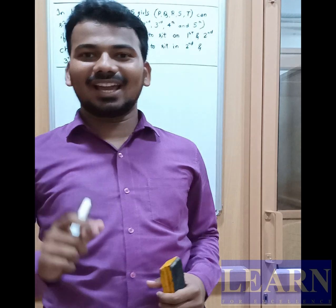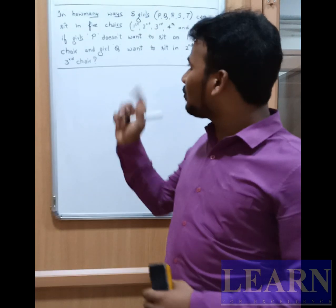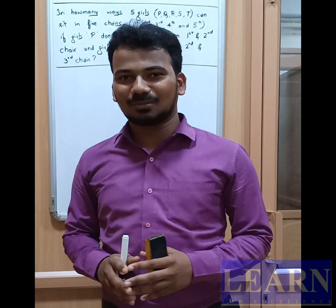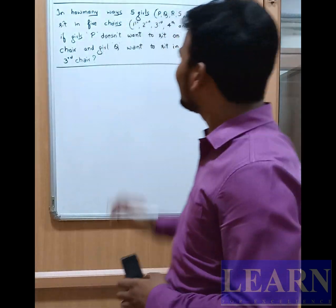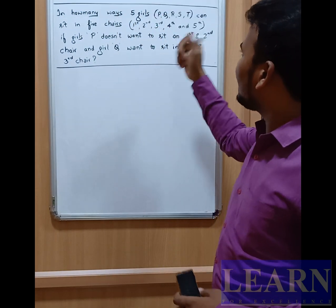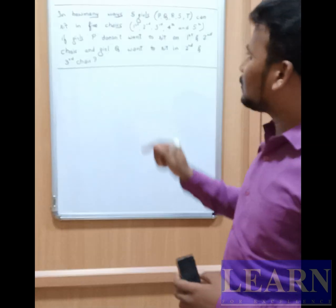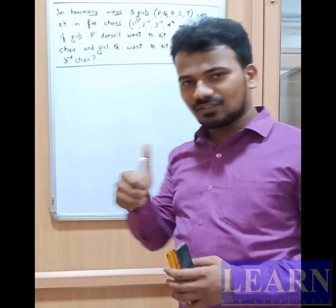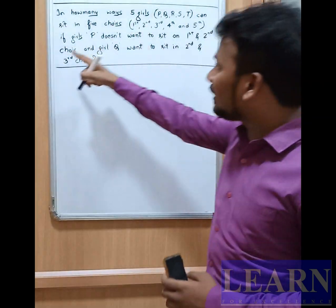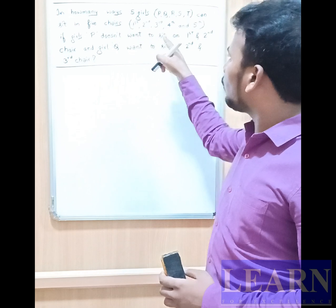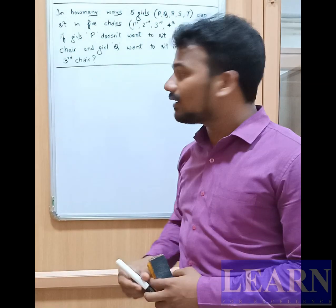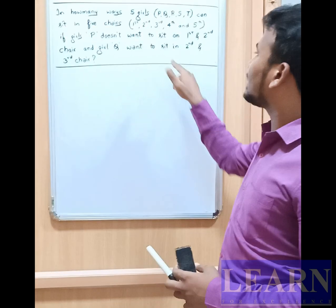Hi friends, today I am here with one more problem on permutation and combination. In how many ways can five girls P, Q, R, S, T sit in five chairs — first, second, third, fourth, and fifth — if girl P doesn't want to sit on the first and second chair, and girl Q wants to sit in the second or third chair?